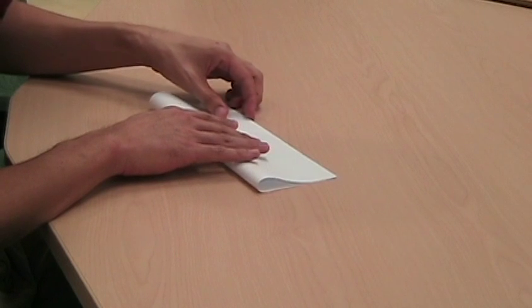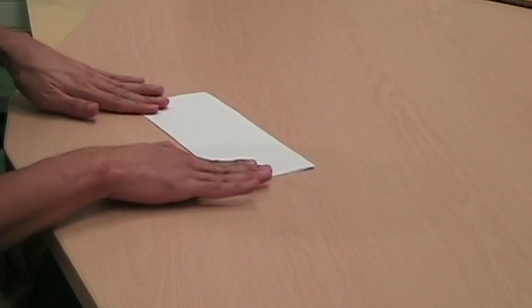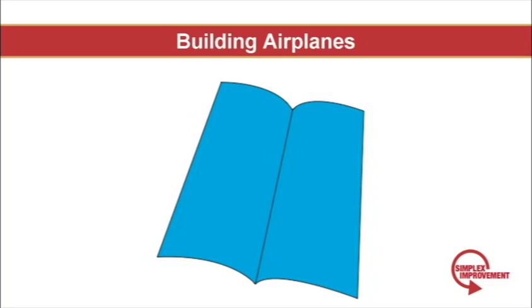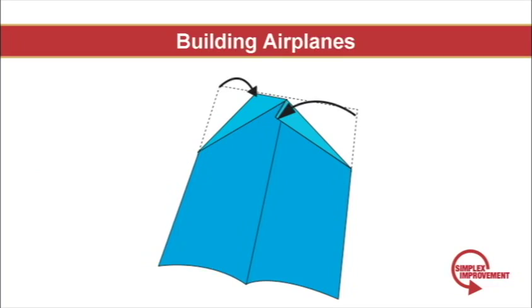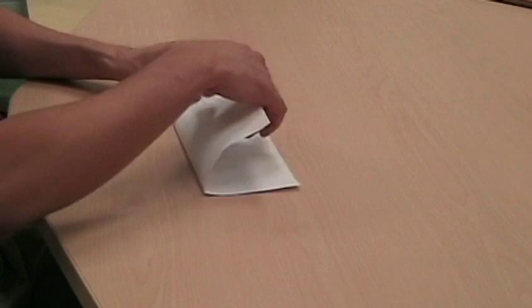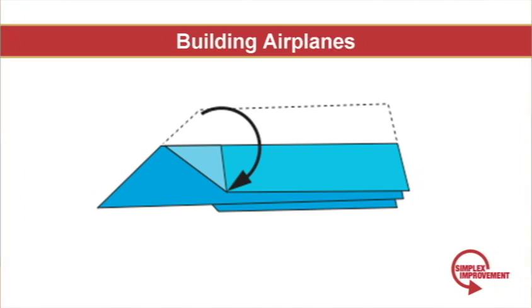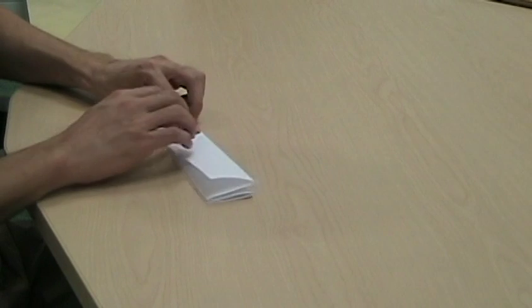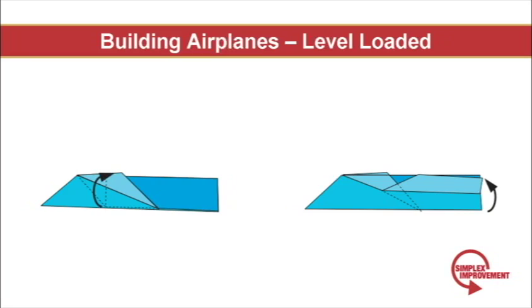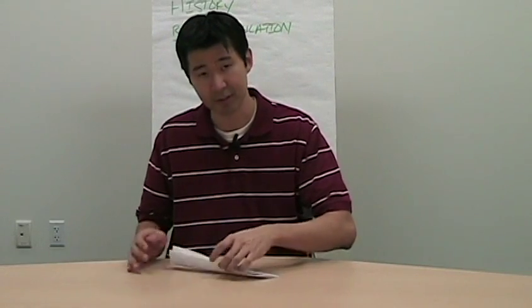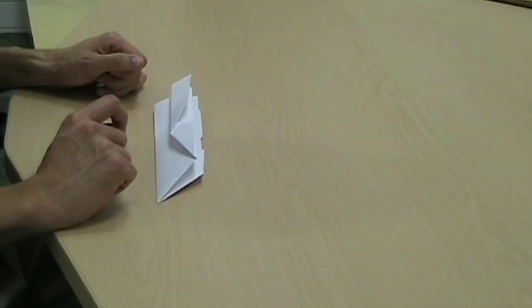Before we get started with the simulation, I'm going to demonstrate how to build this paper airplane. Really simple. First thing you do is make a fold down the middle. Then you fold the nose piece. Then you fold the wings. Then you fold the tips — just two folds on each side. And that's it.